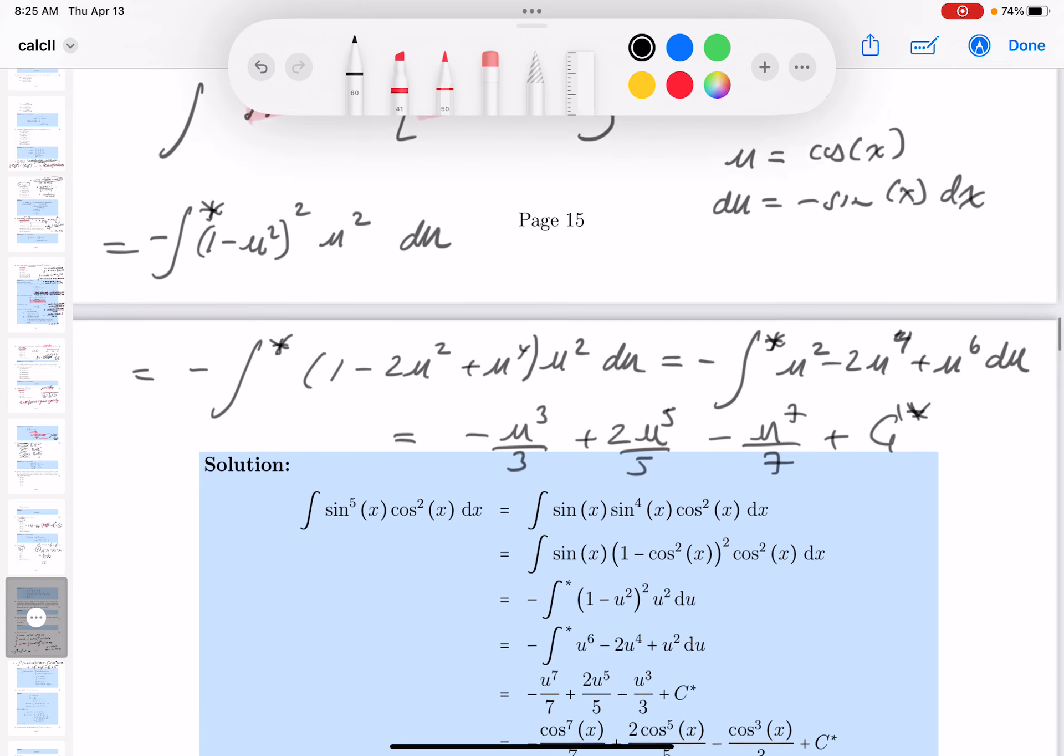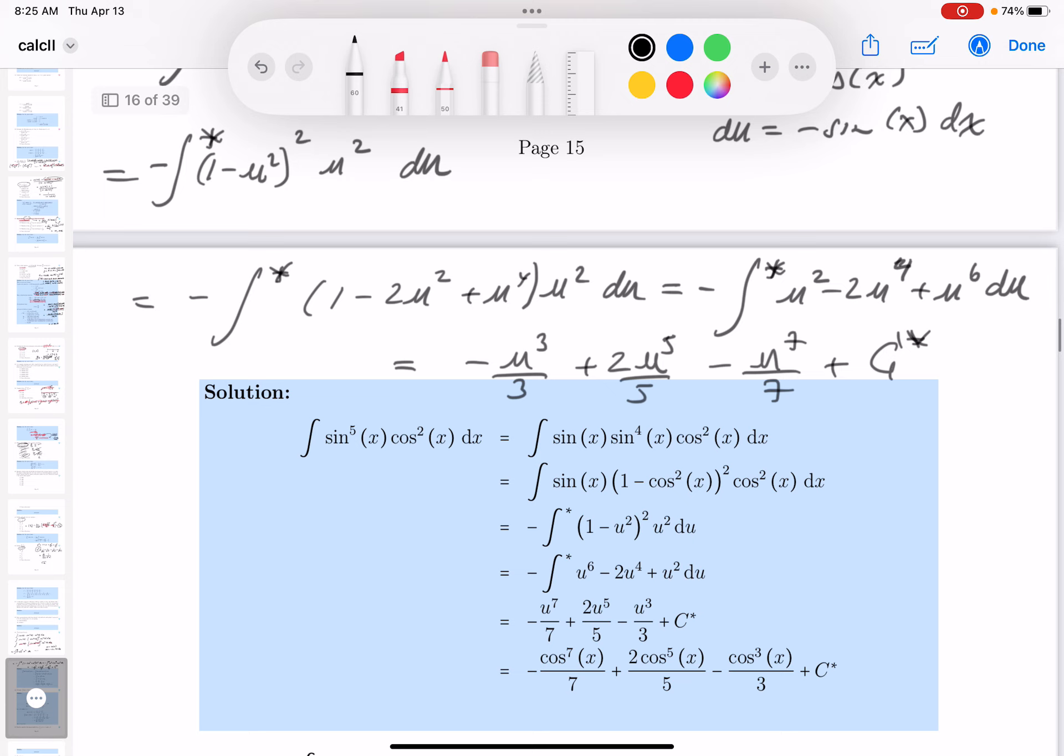All right, now I've got to go back to the u, and the u is cosine. So what are you going to get over here? You're going to get minus cosine cubed of x over 3 plus 2 cosine to the 5th power of x over 5. Minus cosine to the 7th power of x over 7 plus some constant of integration.